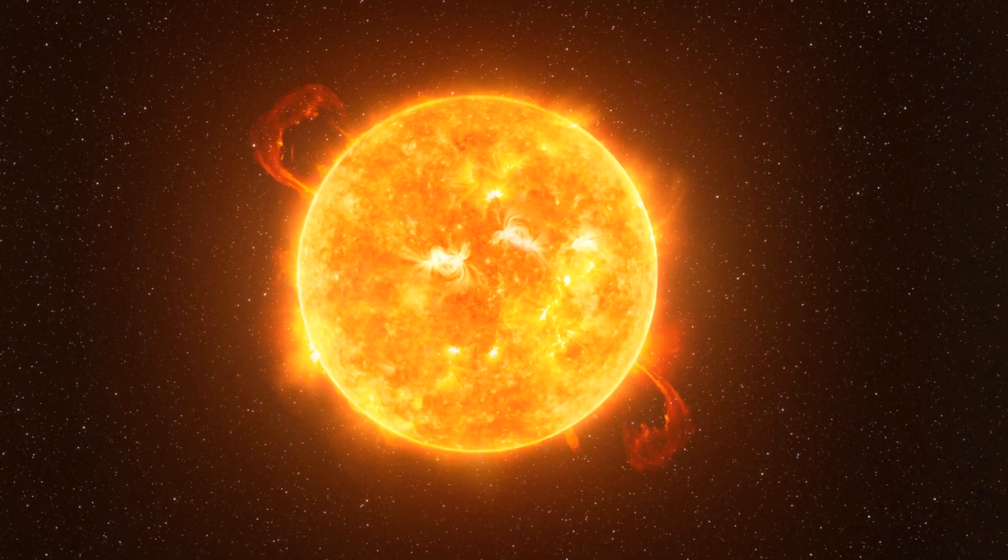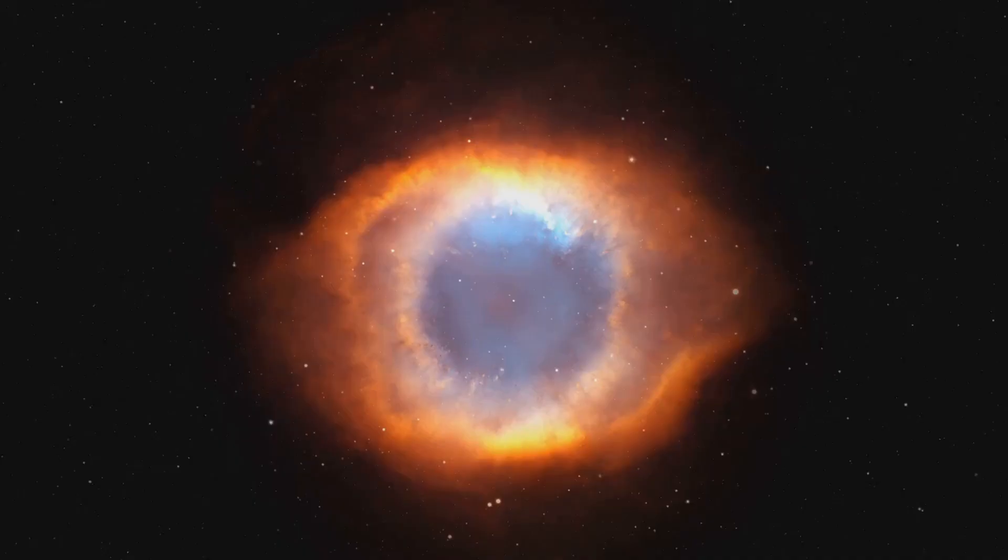Nestled in the Orion constellation, it's not just another star in the night sky. It's one of the brightest, dwarfing our sun in size and luminosity. Betelgeuse is a semi-regular variable star. Its brightness fluctuates over time.